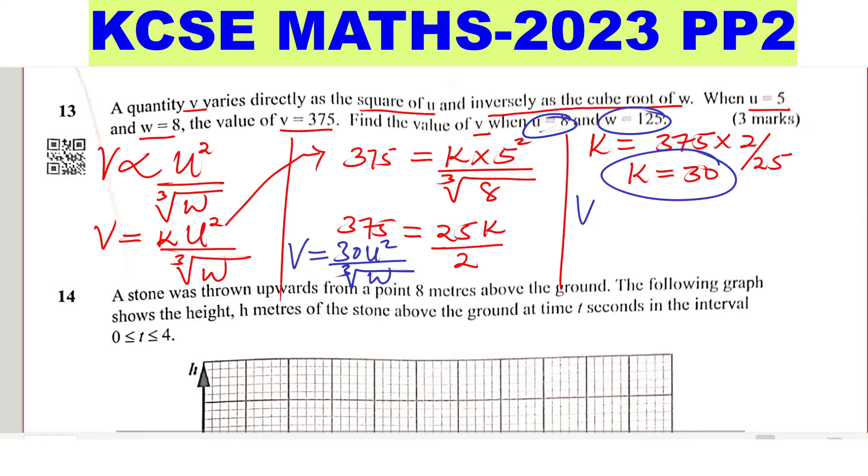So V is given by K, which is 30, now we are using this, the constant is 30, multiply by U squared. U is 8.